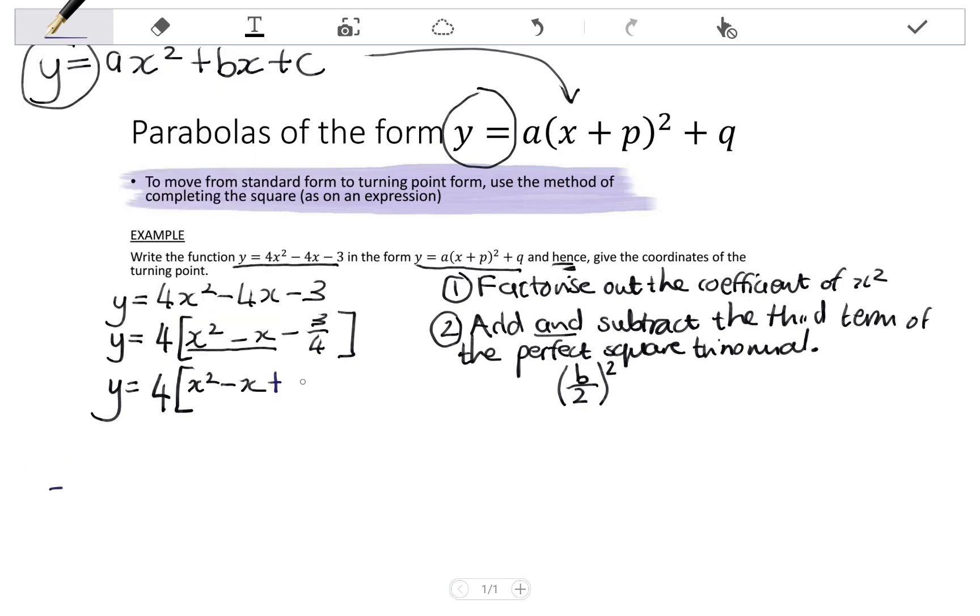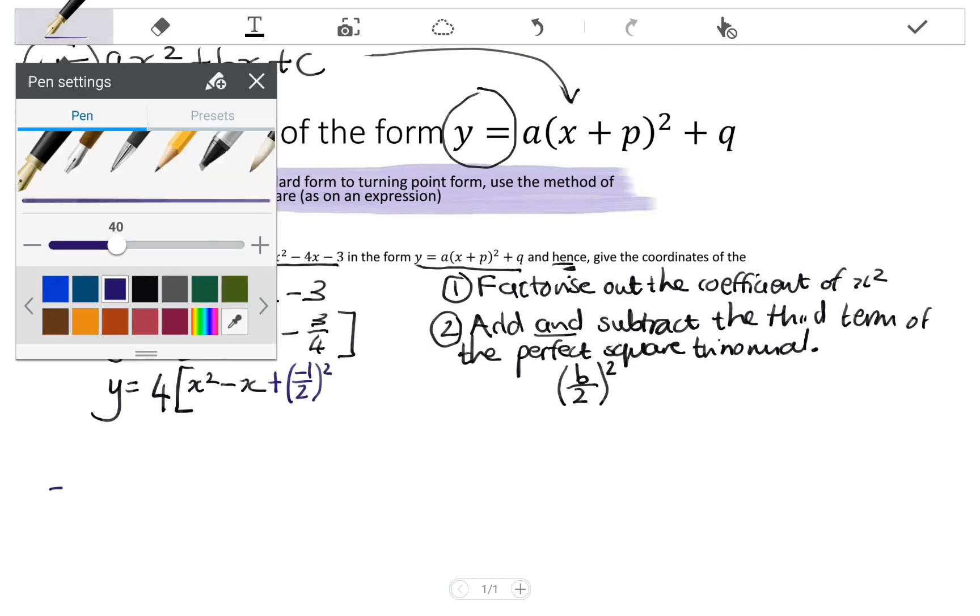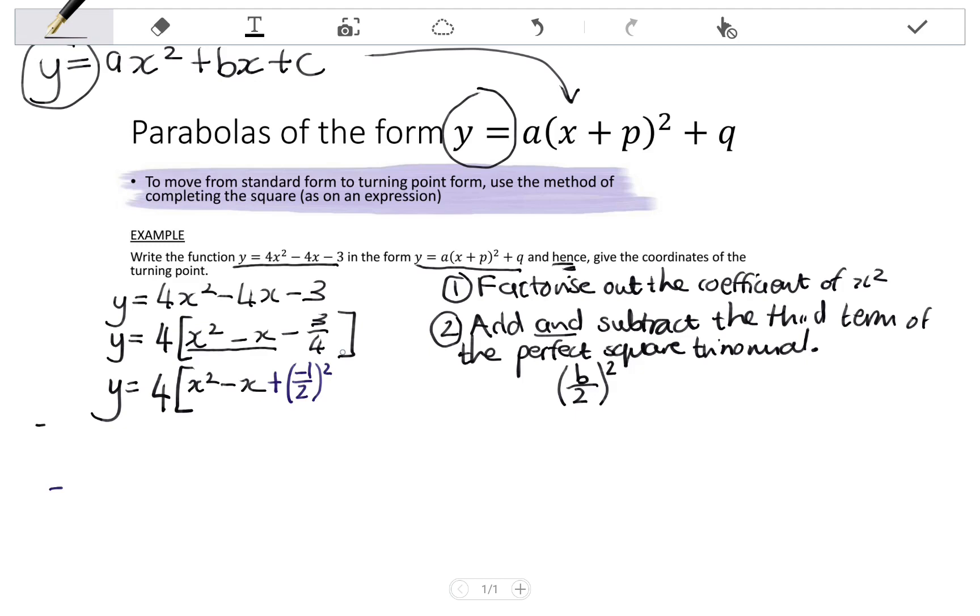Okay, is plus, I'm adding it. Now my b value is negative 1, so it's negative 1. Then I'm halving it, dividing it by 2, and then squaring it. Okay.